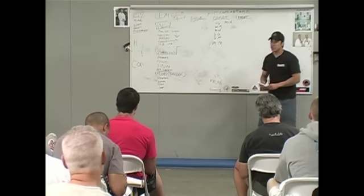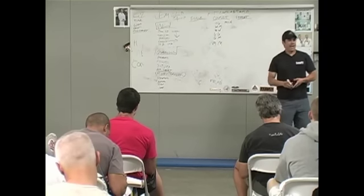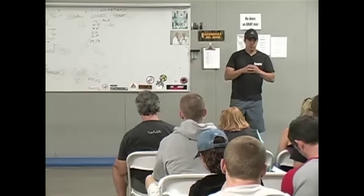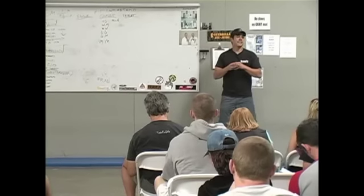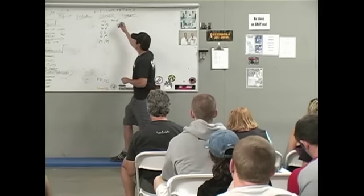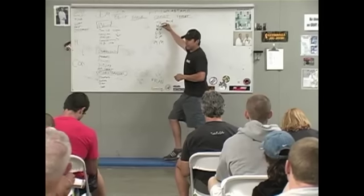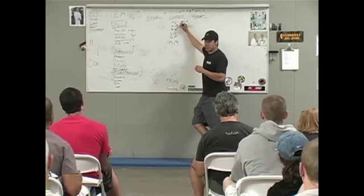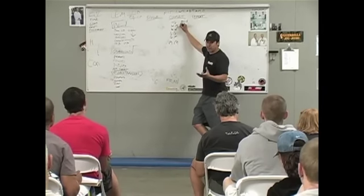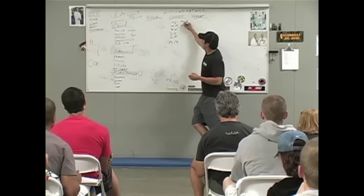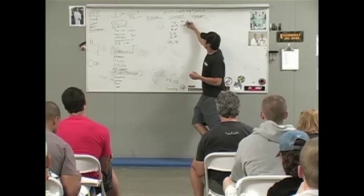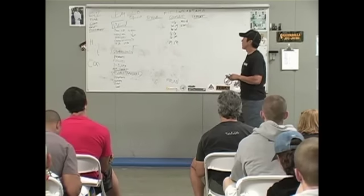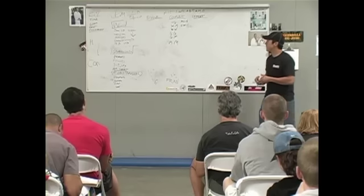Weightlifting monostructural — anyone have an example of a movement that would involve those two? Nancy. Nancy is weightlifting — the overhead squat — and monostructural — the run. So it's an overhead squat and a run: overhead squat 15 reps at 95 pounds, run 400, repeat five times.